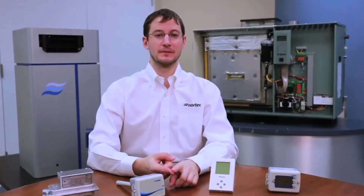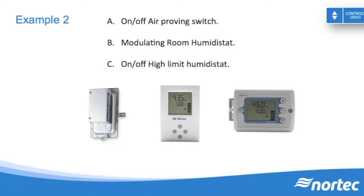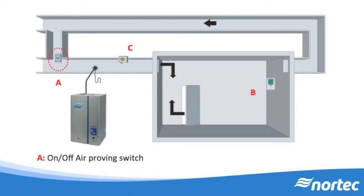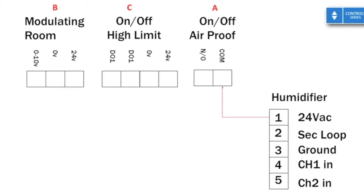Next, let's look at the following three devices: an on-off air proving switch, an on-off high limit, and a modulating humidistat. The on-off air proving switch starts from 24 volts AC on the humidifier's low voltage terminal strip, pin 1. 24 volts leaves the humidifier on pin 1, reaches the common pin of the air proving switch, and when there is airflow, the device closes the connection across the common and the normally open contact, which is then wired to the next on-off device in the loop — the high limit.